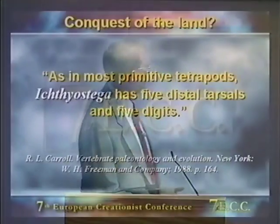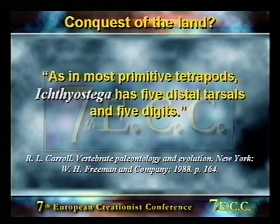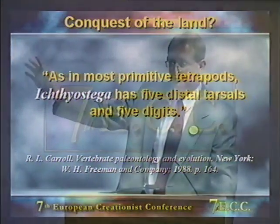Robert Carroll's textbook back in 1988 described Ichthyostega as having five distal tarsals and five digits — five digits was thought to be a primitive condition, and that's why we've all got five fingers, having inherited it from an ancestor with five digits back in the Devonian.